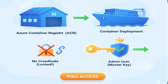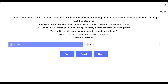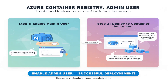Think of Azure Container Registry like a private warehouse that stores your container images. Just like you need proper credentials to access a secure warehouse, you need authentication to pull images from a private registry. The admin user acts like a master key that provides full access to the registry. The correct answer is yes. Enabling the admin user for Registry 1 will meet the goal. According to Azure documentation, the admin account is specifically required for certain deployment scenarios, including deploying container images from Azure Container Registry directly to Azure Container Instances.